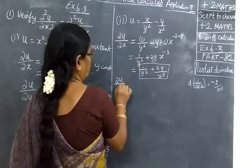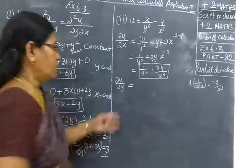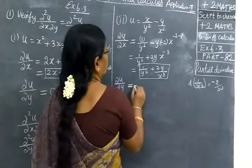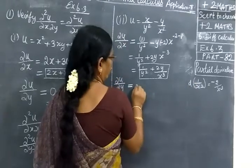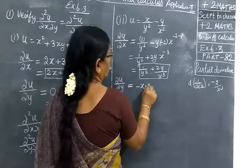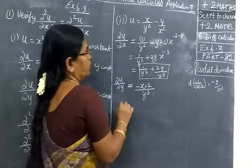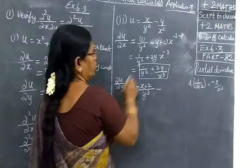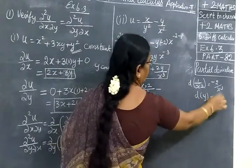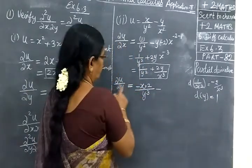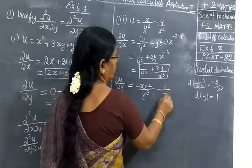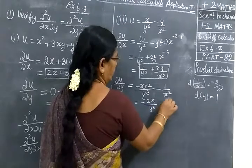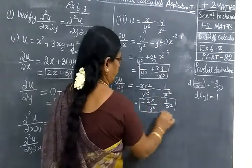Then ∂u/∂y: we are partially differentiating u with respect to y only, treating x as constant. Applying the same method with minus applied: result is minus 2x by y² minus 1 by x square.